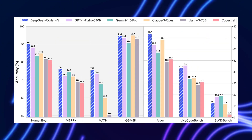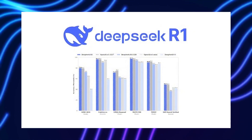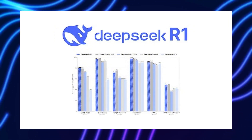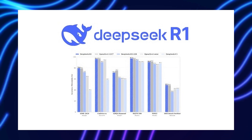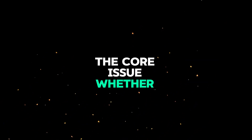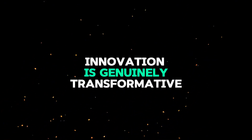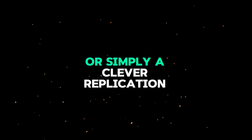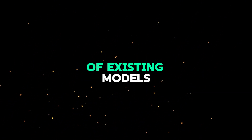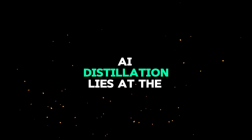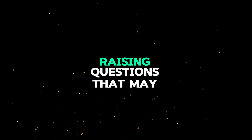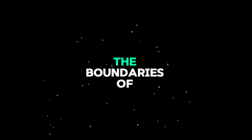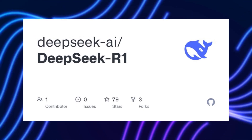In the rapidly evolving landscape of artificial intelligence, the emergence of DeepSeek R1 has sparked debates that go beyond technological breakthroughs. The core issue: whether DeepSeek's AI innovation is genuinely transformative or simply a clever replication of existing models. AI distillation lies at the heart of this controversy, raising questions that may redefine the boundaries of innovation. What's at stake? DeepSeek R1's rise as a powerful AI model.